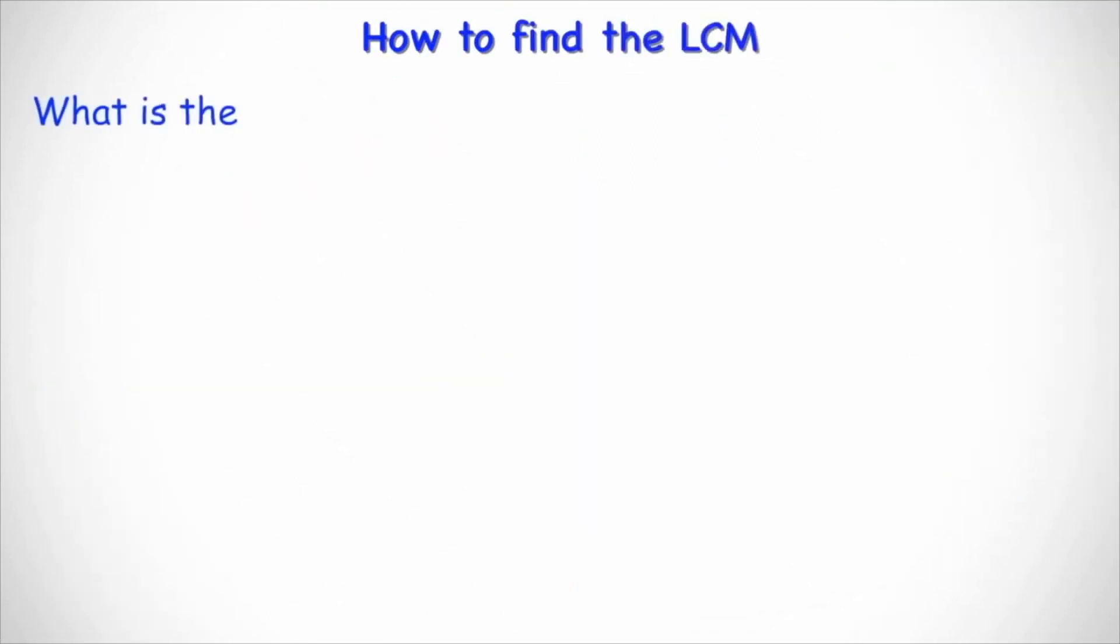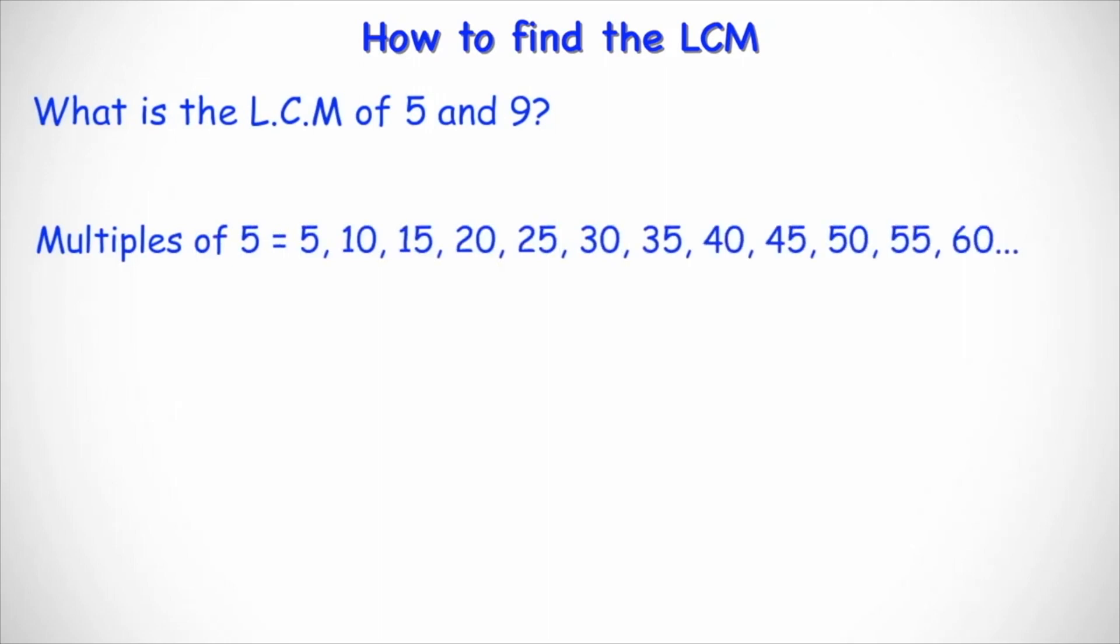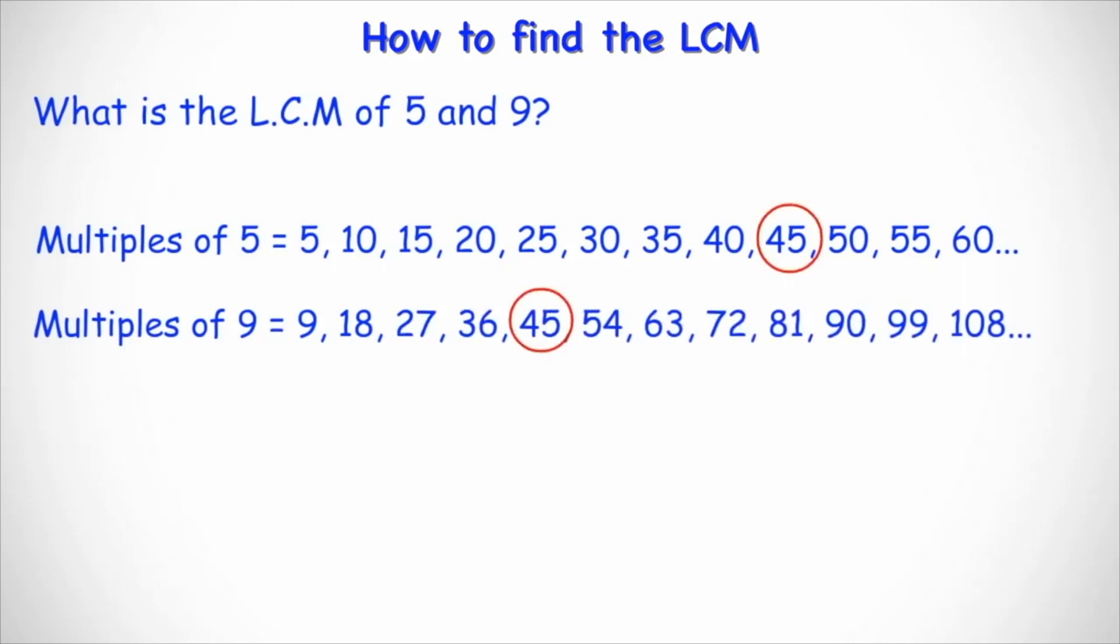Let's take a look at another example. Say you wanted to find the LCM of five and nine. What you do is you list all the multiples of five, which effectively is the times table for five. Then you list all the multiples of nine or the times table for nine. And you find the first number that appears in both of the lists. In this case, 45 is the first number that appears in both lists. Therefore the LCM of five and nine is 45.